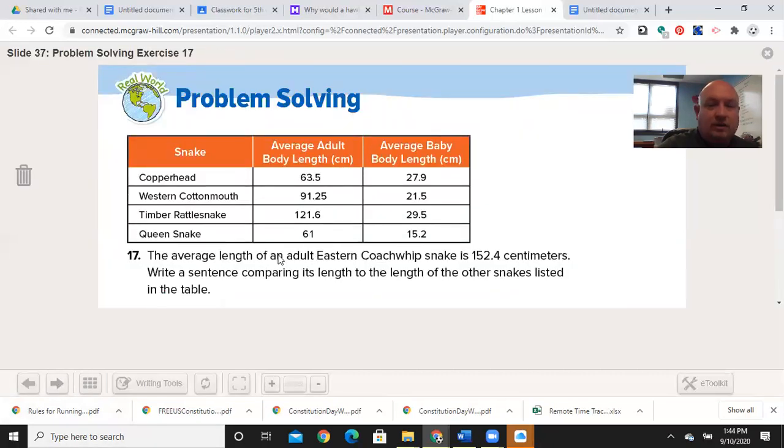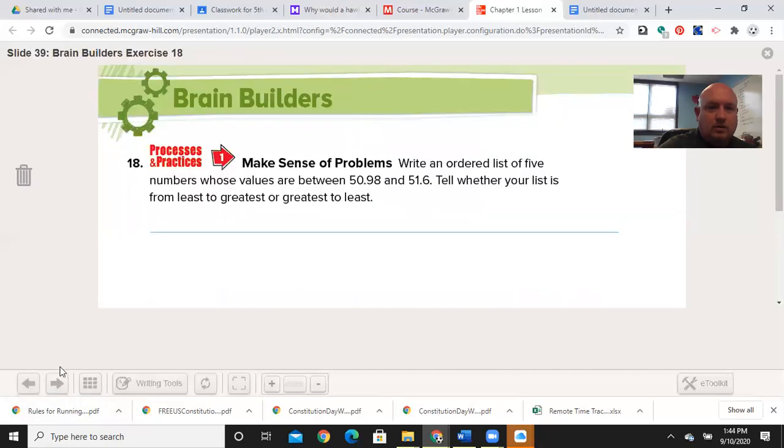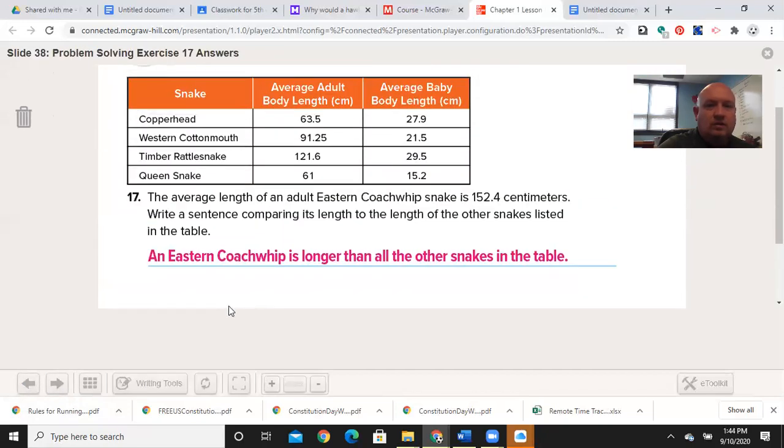And then using the names, make that same for the adults. You can see right there. Number 17: the average length of an adult eastern coach whip snake is 152.4 centimeters. Write a sentence comparing its length to the length of other snakes. Go ahead and try one and then I'll show you some possible answers. You may pause the video now. Welcome back. An eastern coach whip is longer than all of the other snakes in the table. Or if you had chosen to write something like an eastern coach whip is longer than queen snake or picked one of the specifics, you would have been right there.